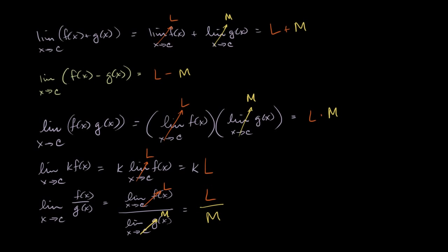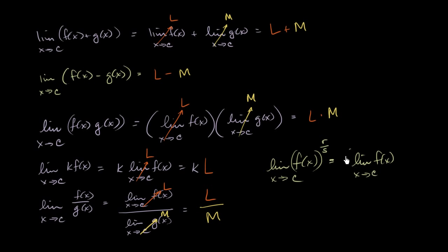Finally, we'll look at the exponent property. The limit of f of x to the r over s power as x approaches c — where r and s are both integers and s is not equal to 0 — is going to be the exact same thing as the limit of f of x as x approaches c raised to the r over s power, which equals L to the r over s power.